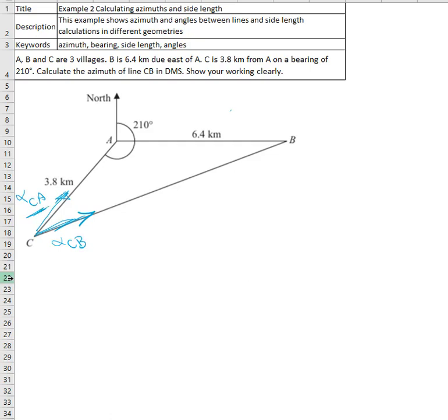That's why we have to calculate it from the other side. We know that alpha AC equals 210 degrees, which is this one. So we have to take the inverse, or the back azimuth. The back azimuth, alpha CA equals.